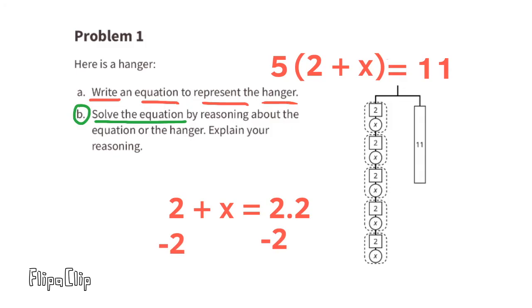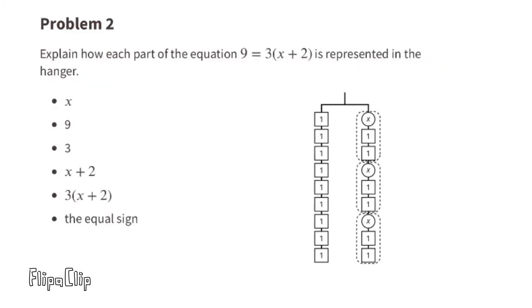Next, to get the x all by itself, we need to subtract 2 from both sides of the equal sign. x + 2 - 2 equals x, and 2.2 - 2 equals 2 tenths. So in this case, x equals 2 tenths.